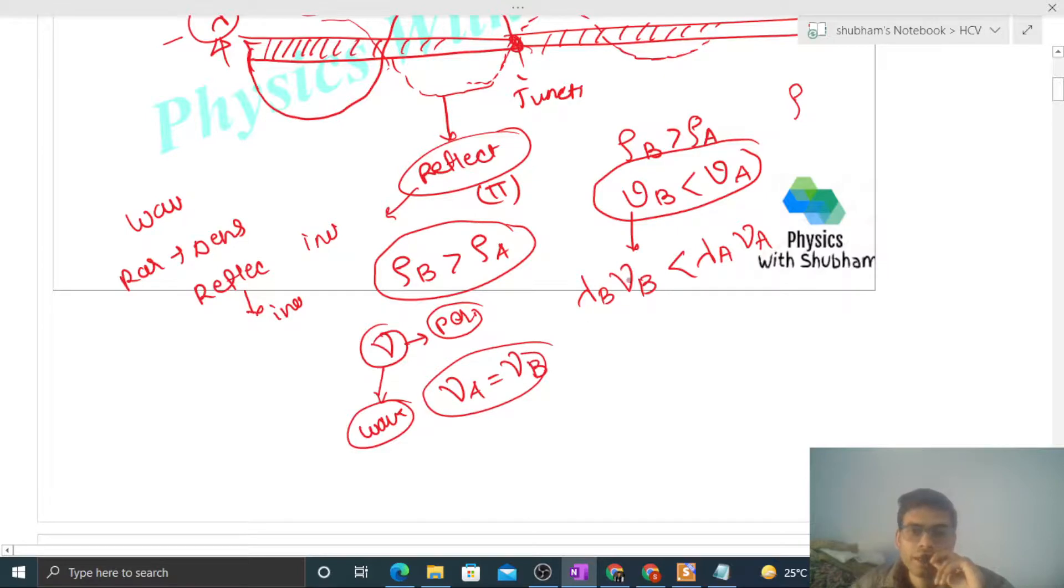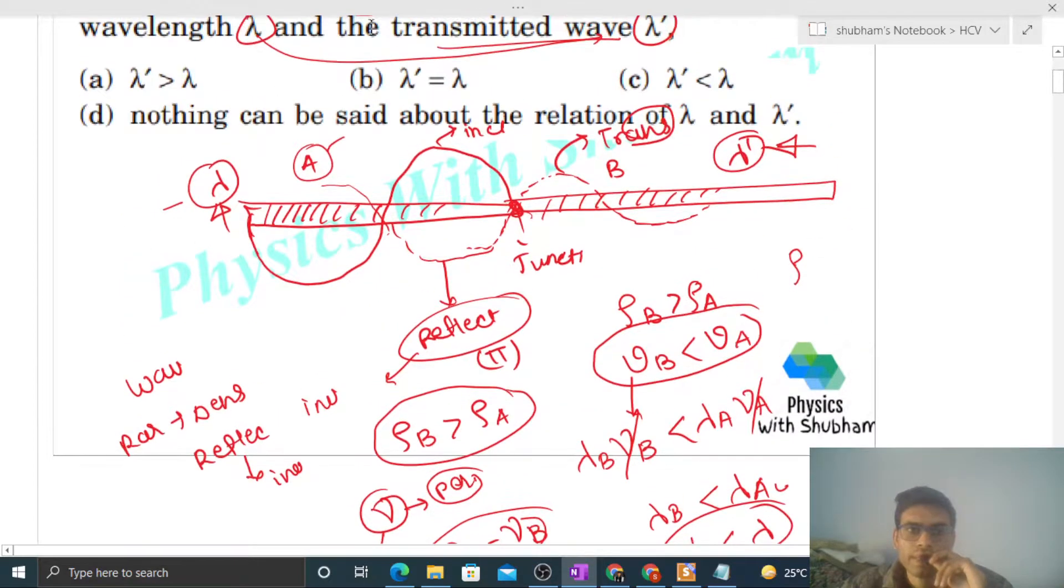So yaha se frequency cancel ho ga. It means jo wavelength hai, that is higher in medium A. It means lambda, that is higher than lambda dash. Medium A mein jo wavelength hai, that is lambda, that is higher, right?